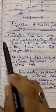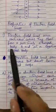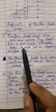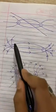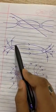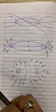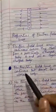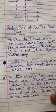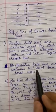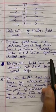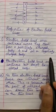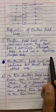Now let's go to the properties of electric field lines. The first point: electric field lines are continuous curves. They start from a positively charged body and end at a negatively charged body, as we have seen in the examples. The electrostatic field lines are continuous but they are not closed loops, because they start from positive and end at negative. A closed loop would mean they start from negative and end at positive, but this never happens.